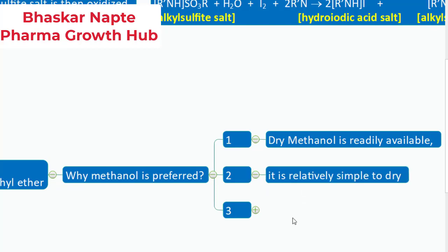The second reason is it is relatively simple to dry. It is easy to remove the water from the methanol and that is the reason it is available readily for use. And third, it is inexpensive, it is cheap, not that costly. Because of these three reasons, and as there is a need of alcohol as a part of the Karl Fischer reagent, methanol becomes the preferred choice.